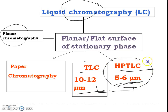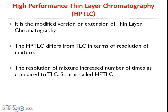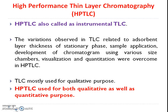A better resolution is observed in HPTLC as compared to thin layer chromatography. So HPTLC is called a modified version or an extension of TLC. It differs from TLC on the basis of resolution — resolution increases a number of times as compared to TLC — and that is why it is called High Performance Thin Layer Chromatography. HPTLC is also called instrumental TLC.